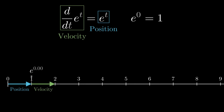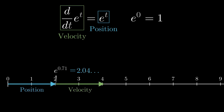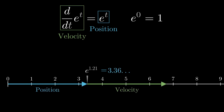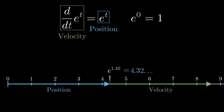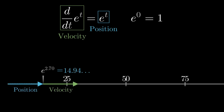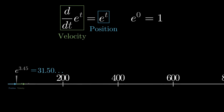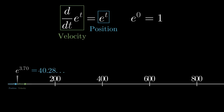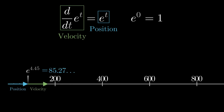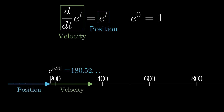The farther away from 0 you are, the faster you move. So even before knowing how to compute e to the t exactly — going from a specific time to a specific position — this ability to associate each position with a velocity paints a very strong intuitive picture of how the function must grow. You know that you'll be accelerating, and at an accelerating rate, with an all-around feeling of things getting out of hand quickly.